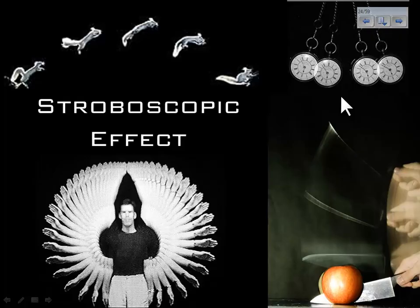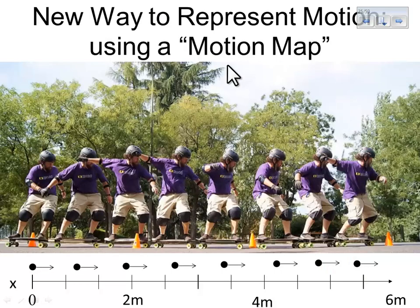So using this idea, here's another example. So this is just a picture of a skateboard kind of weaving through some cones. We're going to use dots and arrows to represent the motion of something, in this case moving at about a constant velocity, and we call this new representation a motion map.